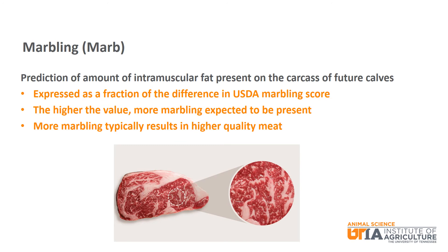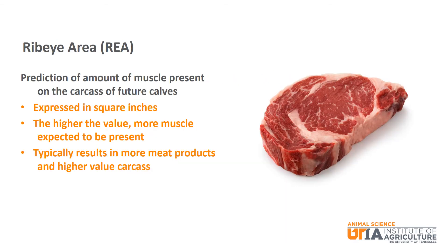Next are three carcass-oriented EPDs, beginning with marbling. The marbling EPD is a prediction of the intramuscular fat present in the carcass of future calves, expressed as a fraction of the difference in the USDA marbling score. The higher the value, the more marbling that can be expected, and more marbling typically results in higher quality meat products. The rib eye area EPD is a prediction of the amount of muscle present on the carcass of future calves, expressed in square inches. The higher the rib eye area value, the more muscle expected, typically resulting in more meat products and a higher value carcass.